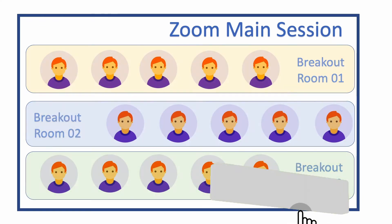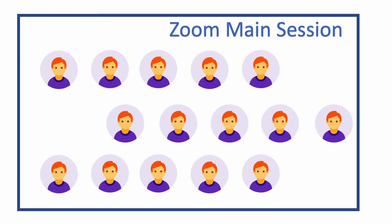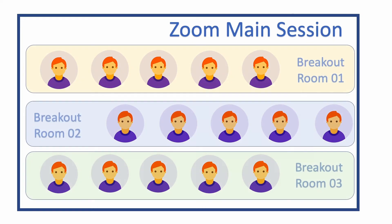You create a main meeting, and once the participants — as we call them in Zoom's language — have joined and the main session is over, they are going to split into different small sections or small groups. For that, we will use the Zoom breakout room.